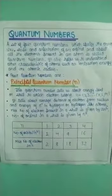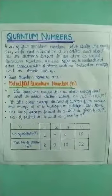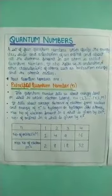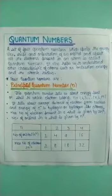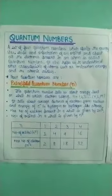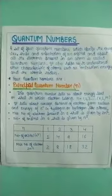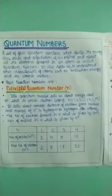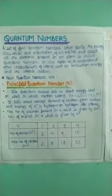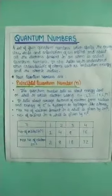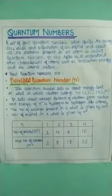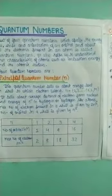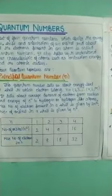Quantum numbers. A set of four quantum numbers which specify the energy, size, shape and orientation of an orbital, and about all the electrons present in an atom, is called quantum numbers. A set of four quantum numbers gives us energy, size, shape and orientation of an orbital, and the amount of electrons present in an atom.